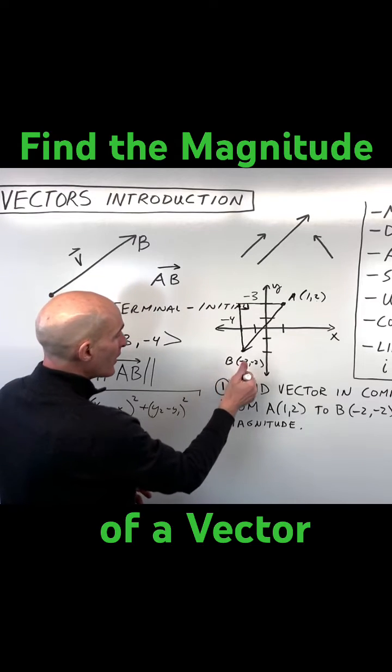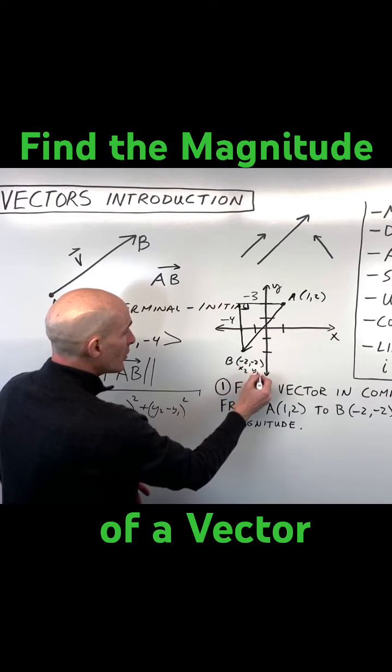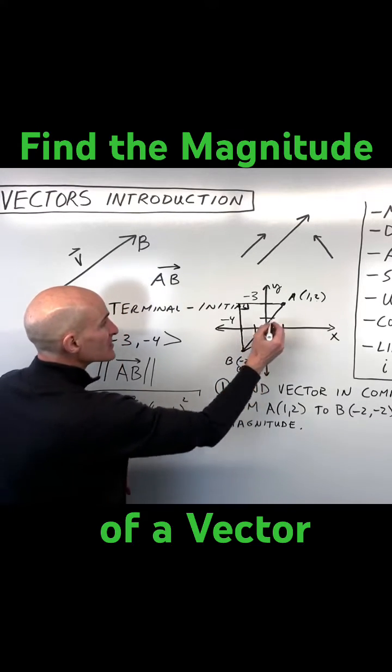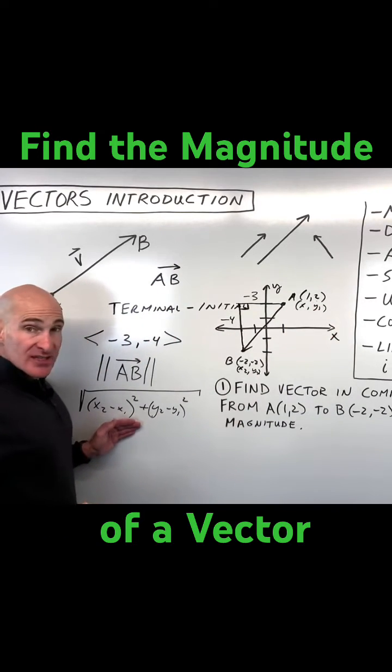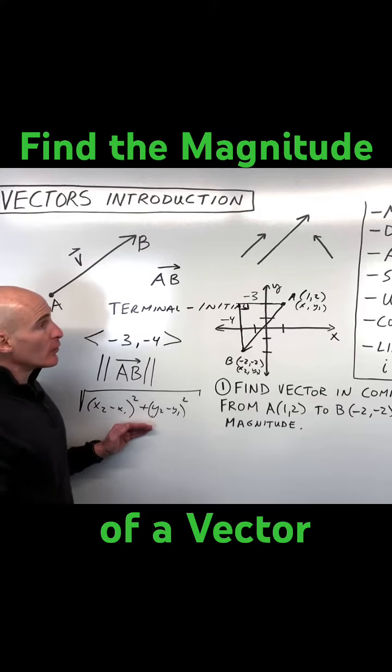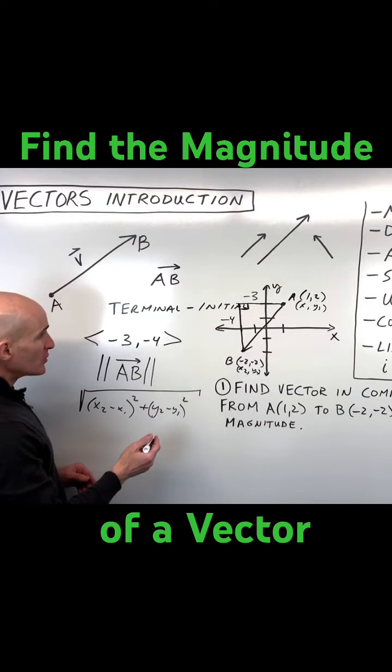So you could think of this terminal point as x2, y2, and you can think of this initial point here as x1, y1. And again, you can see that this is basically the distance formula, which is based on the Pythagorean theorem.